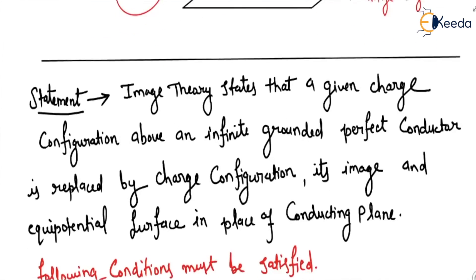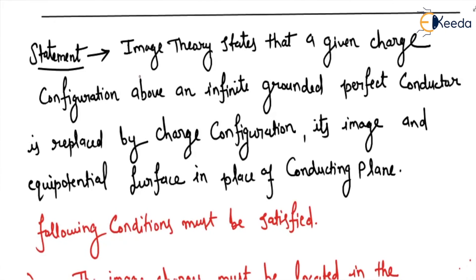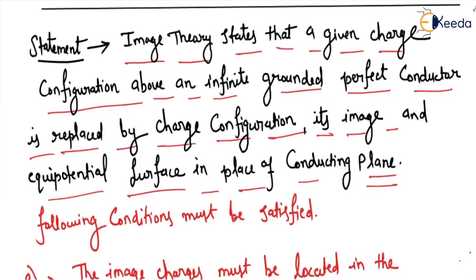So let us understand what is the statement of this image theory. Image theory states that a given charge configuration above an infinite grounded perfect conductor is replaced by charge configuration and its image and equipotential surface in place of conducting plane. Following conditions must be satisfied.